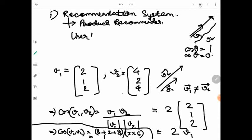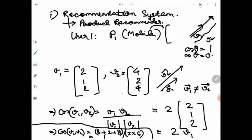Say a user has a product P1 which is a mobile phone — a very old phone from Micromax, purchased around 2015 or 2016. It has features that are not of much value, so the quantification of the features is very low.